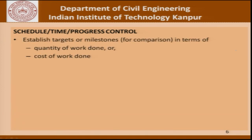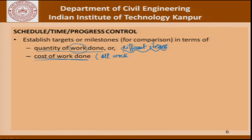As far as schedule, time, and progress control is concerned, it establishes targets or milestones for comparison in terms of either the quantity of work done or the cost of work done. The difference between quantity of work done and cost of work done is something we will discuss extensively. The quantity of work done depends on different items, whereas when it comes to cost of work done, all work can be reduced to a total cost — that is the advantage of working with cost.